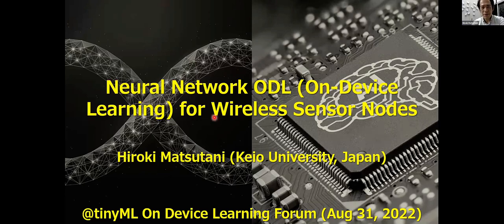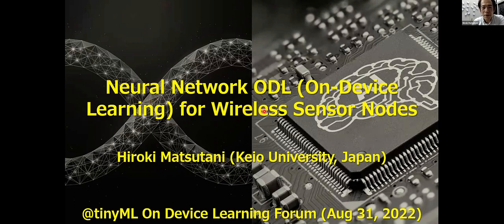Thank you for the introduction and hello everybody. This talk is about on-device learning of neural networks for wireless sensor nodes. Our applications are anomaly detection, which can be specialized for a given environment by training at a deployed environment. I will start with the motivation of on-device learning on resource-limited edge devices.